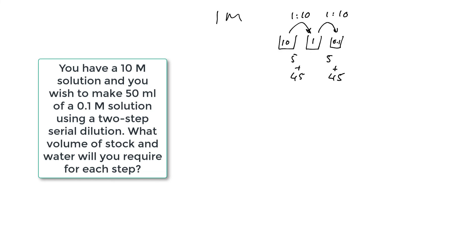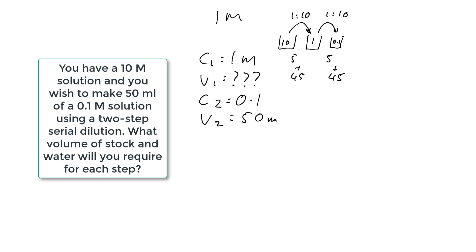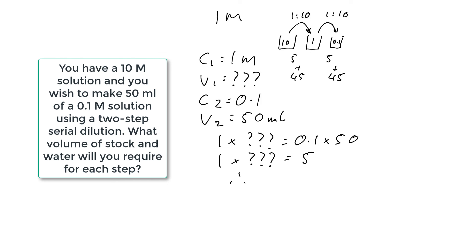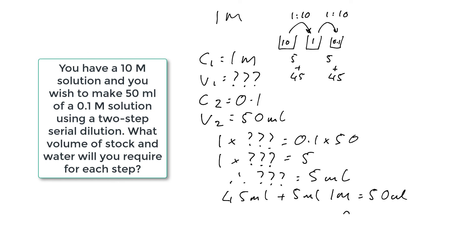So how do we know this is correct? Let's put the numbers back into the equation. C1 is now equal to 1 molar, V1 we're still calculating, C2 is equal to 0.1 molar, and V2 is equal to 50 mils. Putting the numbers in: 1 multiplied by V1 equals 0.1 multiplied by 50, which equals 5, therefore V1 is equal to 5 mils. So if we take 45 mils of water and add 5 mils of the 1 molar solution, that gives us 50 mils of the 0.1 molar solution.